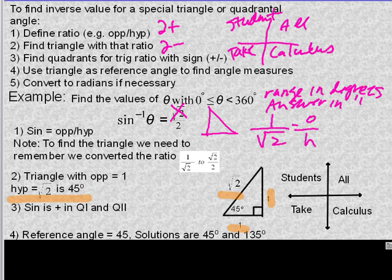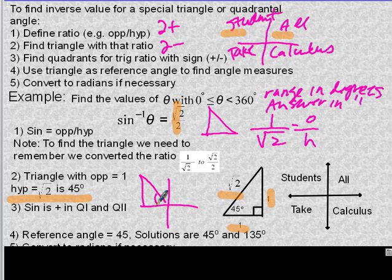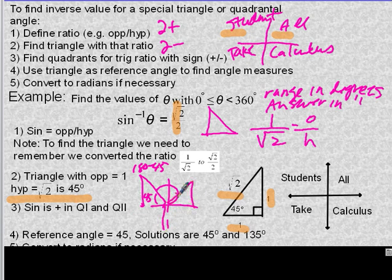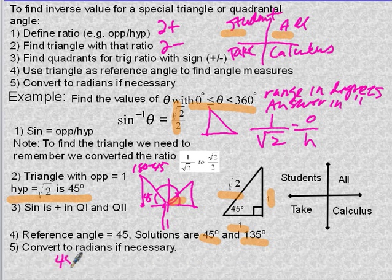Now we find the quadrants. The ratio is positive — no negative sign — so we look for the positive quadrants for sine, which are quadrant 1 and quadrant 2. In quadrant 1 the angle is 45 degrees, and in quadrant 2 it's 180 minus 45, which is 135 degrees. We don't need to convert to radians because the range was given in degrees. So our answers are 45 degrees and 135 degrees.